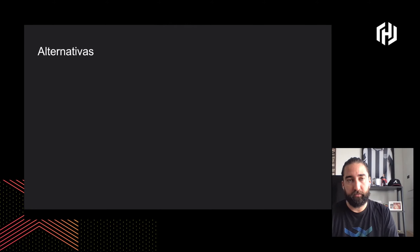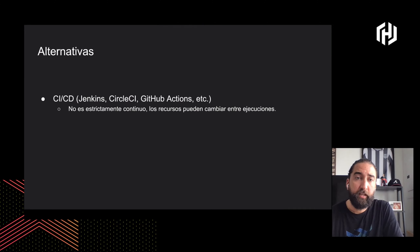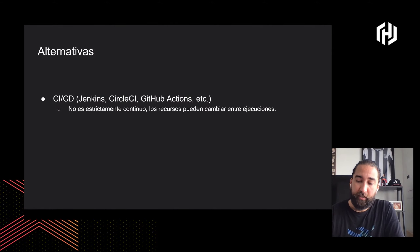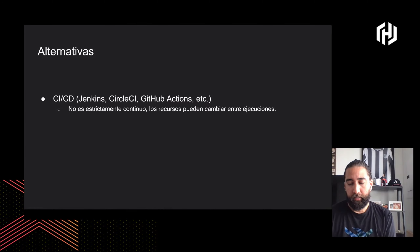Quiero dar las alternativas que pude haber tomado. Primero, pude haber hecho esto con un CI/CD: levantar un Jenkins, ponerlo en CircleCI, etc. Pero el problema es que no es estrictamente continuo. La sincronía solo ocurre en el momento en que se ejecuta, y entre ejecuciones pueden cambiar tanto los recursos en Terraform como los recursos sincronizados en Kubernetes, sin ninguna garantía.